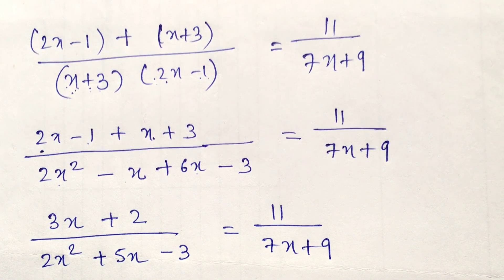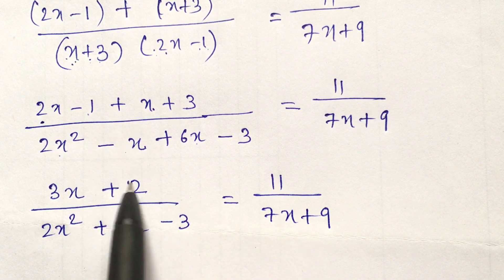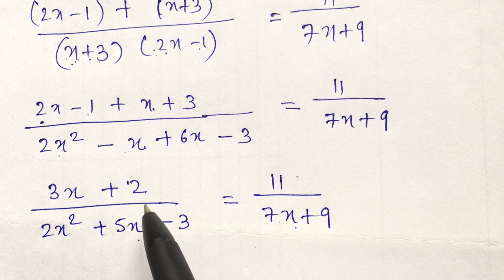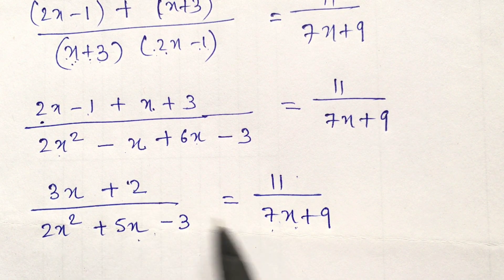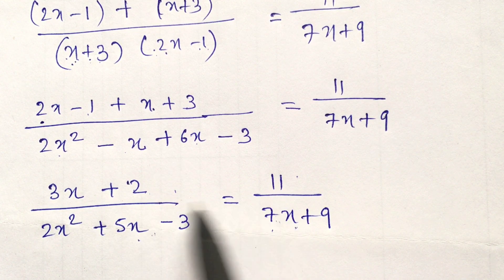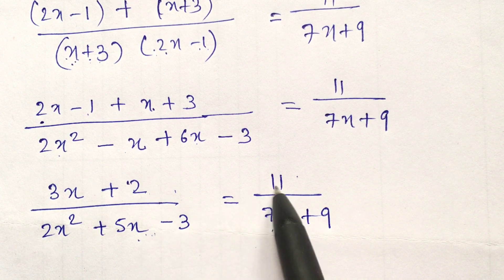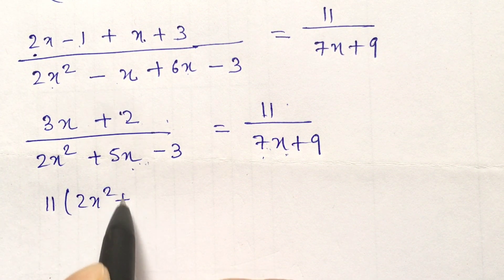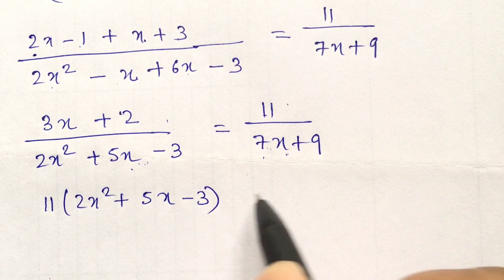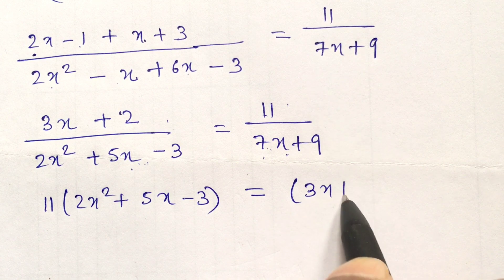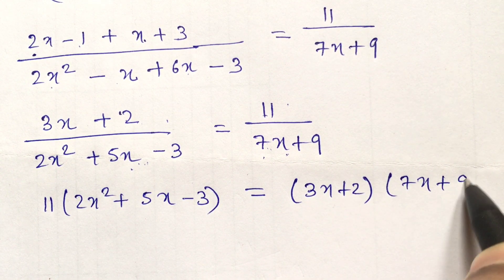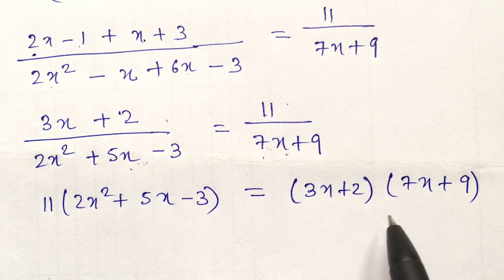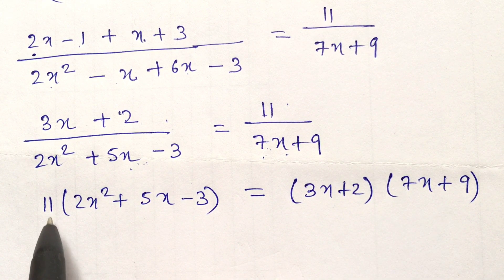Now we have to cross multiply: this into this equals this into this. Always remember you have to do the cross multiplication. So I am taking 11 into (2x² + 5x - 3) equals (3x + 2) into (7x + 9). It is better to write inside brackets, otherwise there will be mistakes.